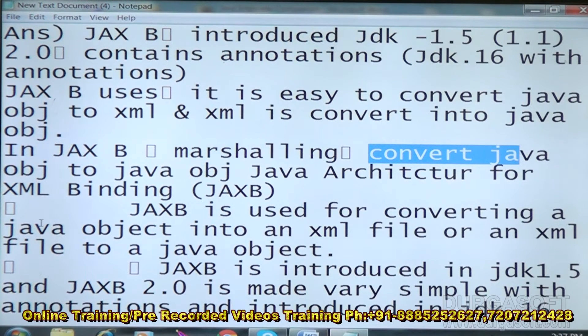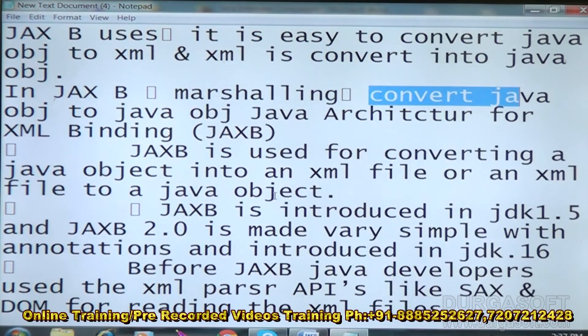JAXB stands for Java Architecture for XML Binding. It is used for converting Java objects into an XML file, or an XML file into Java objects.